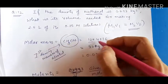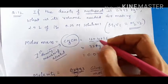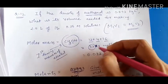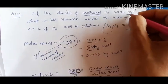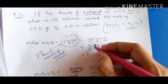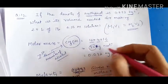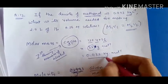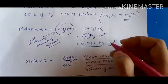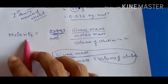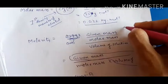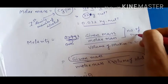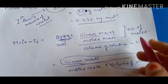Molar mass of methanol (CH₃OH): carbon = 12, hydrogen × 4 = 4 (three plus one), oxygen = 16. Total = 32 gram per mole. Since density is in kg, we convert: 32 g/mol = 0.032 kg per mole. Now we proceed to find molarity.